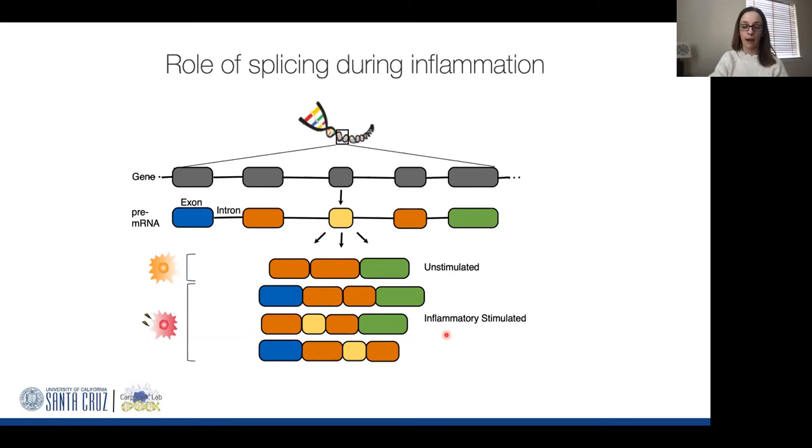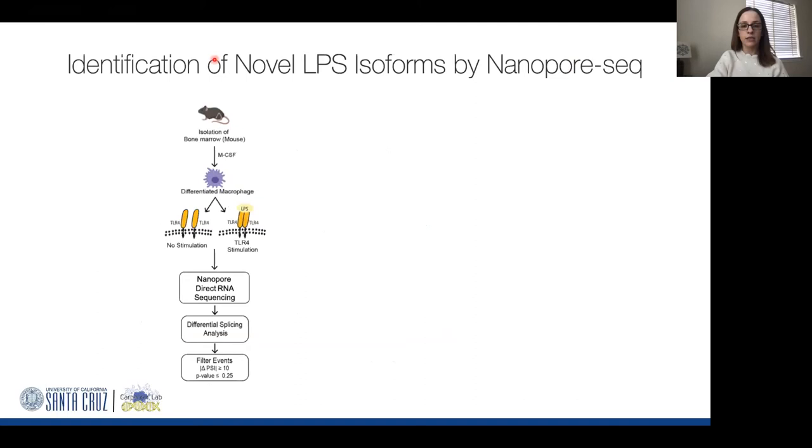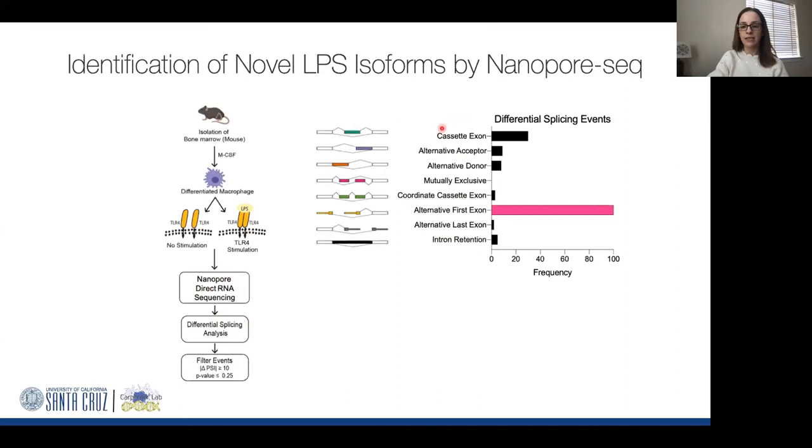To do this, we started by doing nanopore sequencing, taking advantage of long read technology to see complete isoforms made in cells. We performed direct RNA sequencing on bone marrow-derived macrophages from mice—control cells or cells activated to turn on inflammation using LPS, a component of gram-negative bacteria that drives inflammation through toll-like receptor 4. We performed differential splicing analysis and looked at significant hits. Here I'm showing you all the different splicing events we identified that change after turning on inflammation in macrophages. We were very interested in this particular class of event: alternative first exon usage, because this is the dominant splicing event we identified following inflammatory activation.